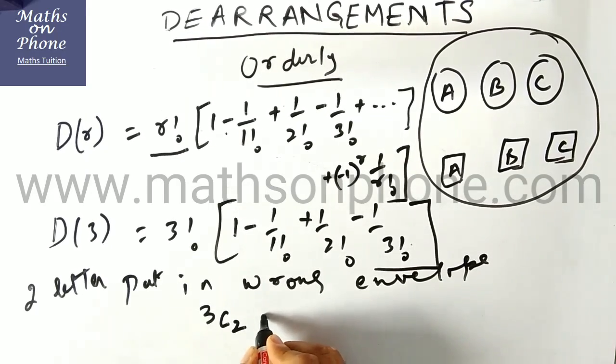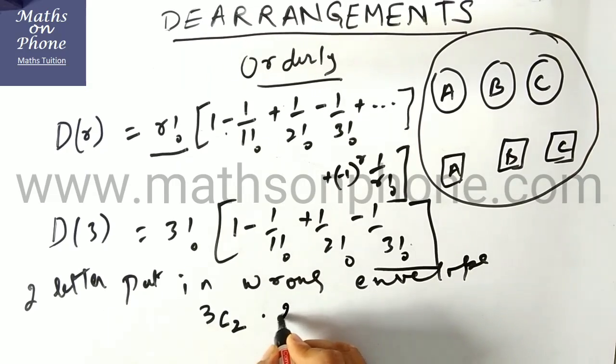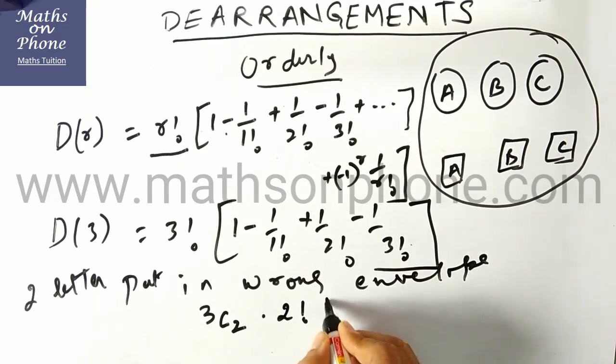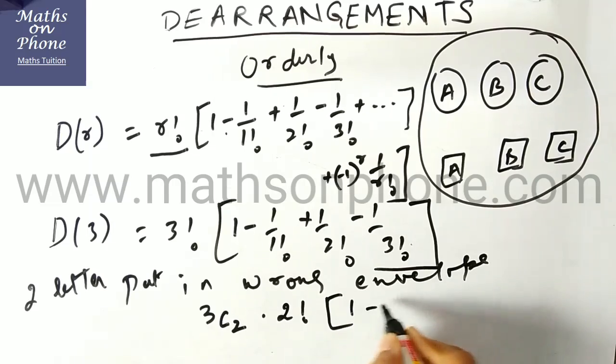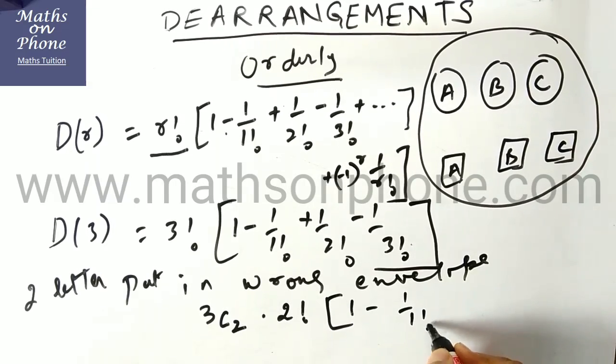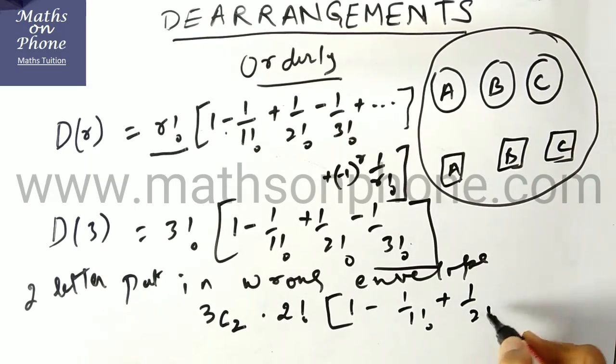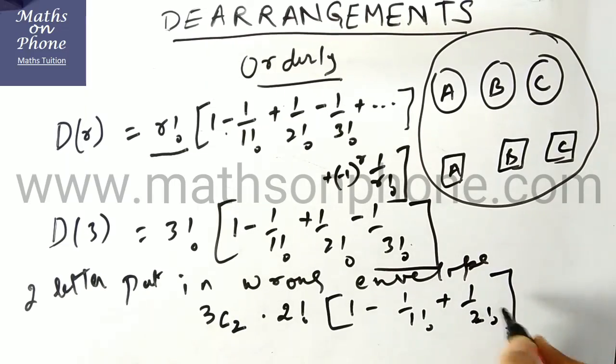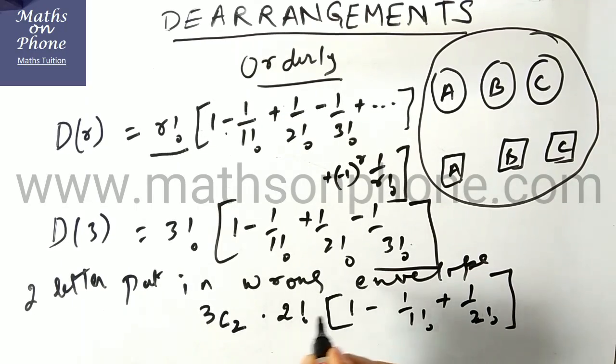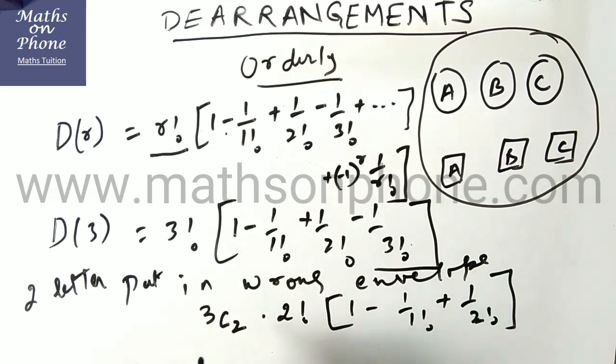Then the derangement of 2 letters will be, you just tell me: this is 2 factorial [1 minus 1 by 1 factorial plus 1 by 2 factorial]. We have to stop here, 2 things done. So we can easily find the number of derangements by following this simple process.